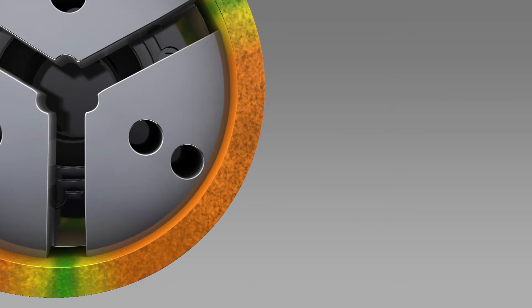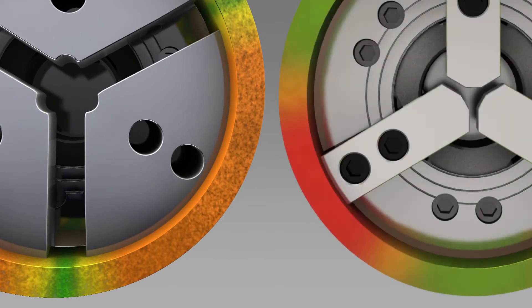As shown in this graphic, gripping force is distributed much more evenly over the surface area of our pie jaws than compared to a regular soft jaw.